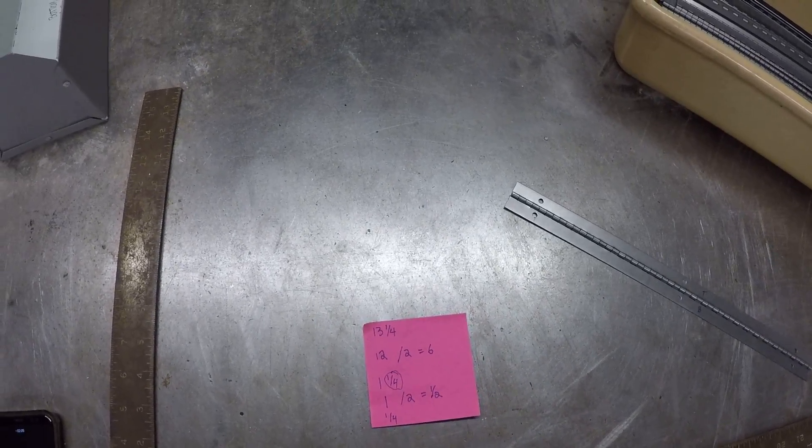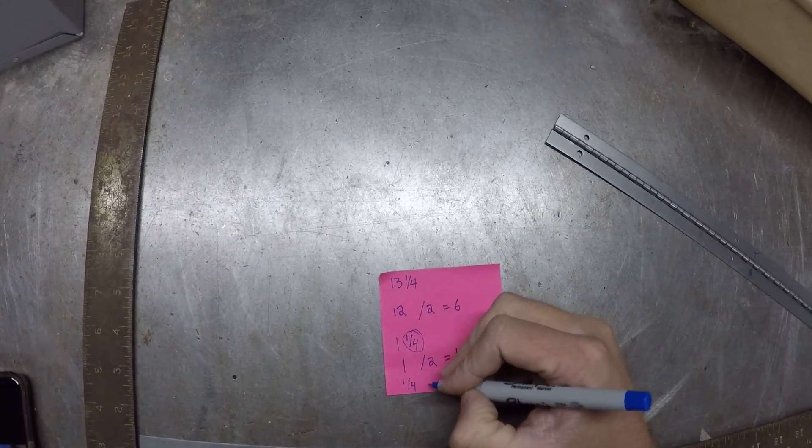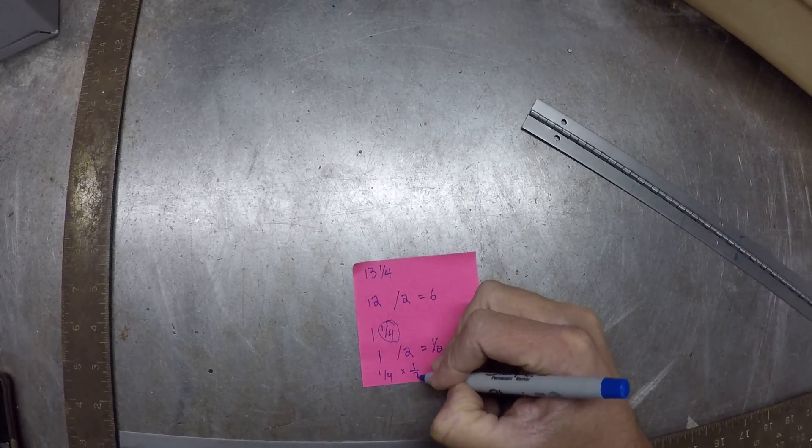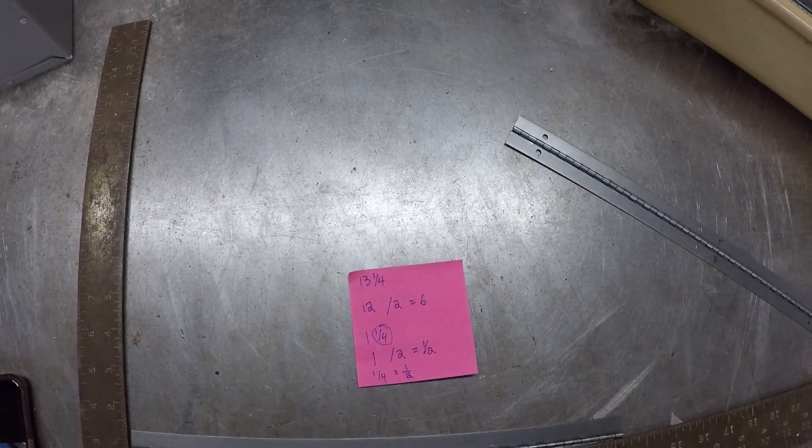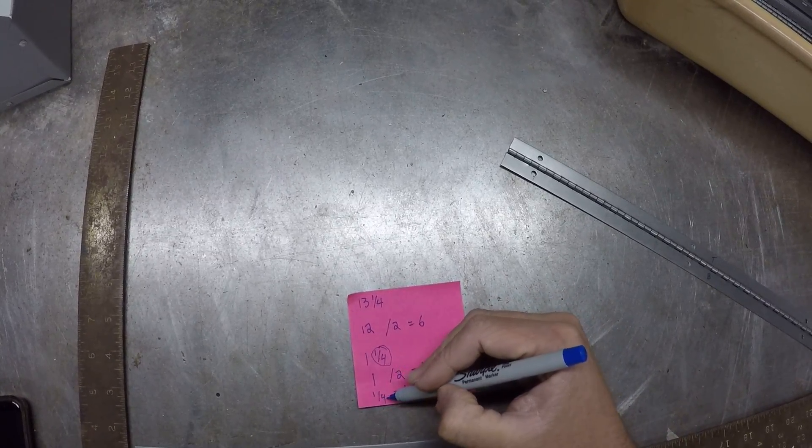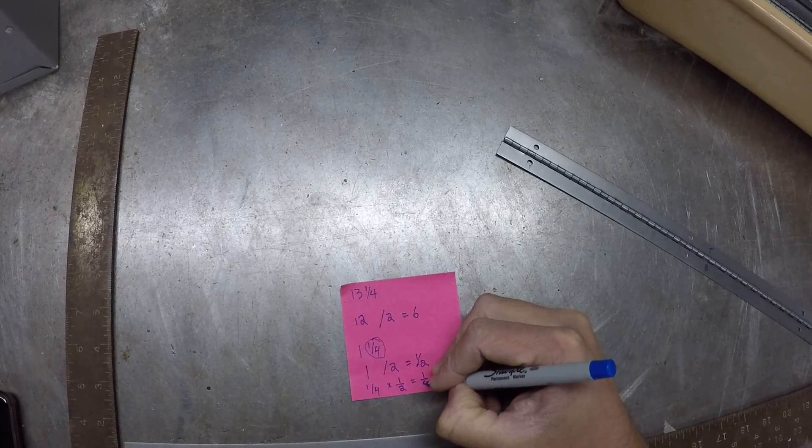So for taking halves of fractions, it's the same thing as multiplying by one over two. So our fractional system works really well because if I take one fourth times one half, I get one eighth.